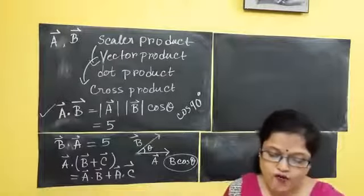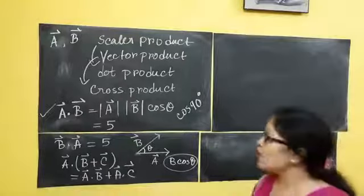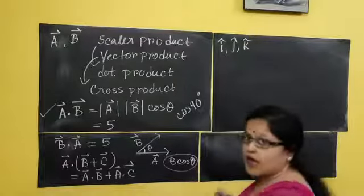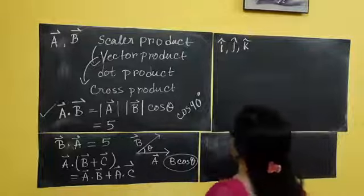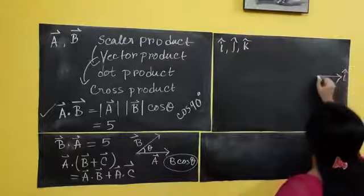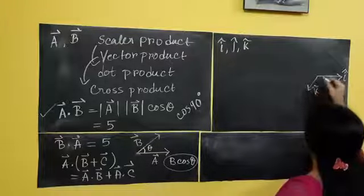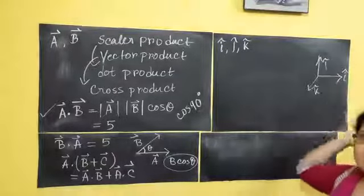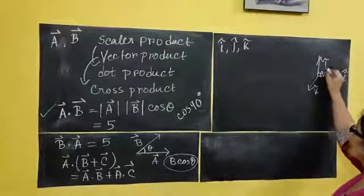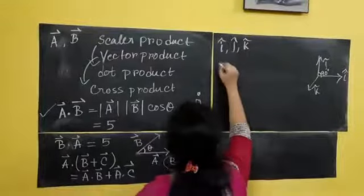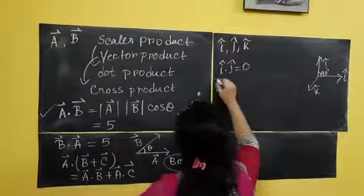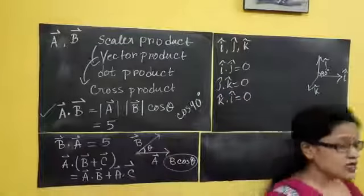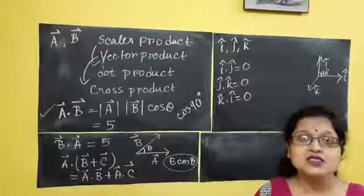The scalar product of orthogonal unit vectors: we have three orthogonal unit vectors — I cap, J cap, K cap for x, y, z axes. I dot J: the angle between I and J is 90 degrees, so I dot J equals 0. Similarly, J dot K equals 0, and K dot I equals 0. So if I do a scalar product between two mutually perpendicular vectors, that gives me 0.